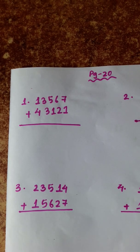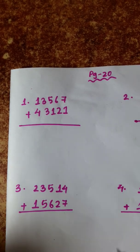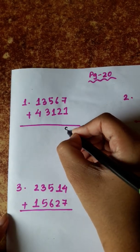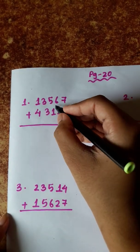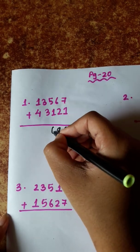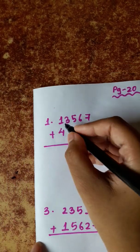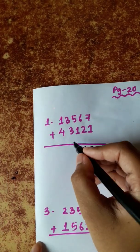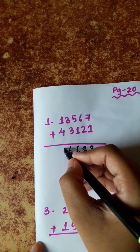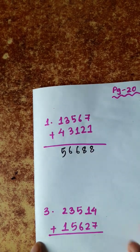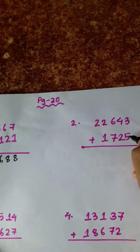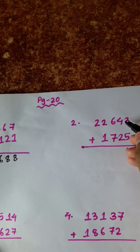Next is page 20 additions. 7 plus 1 is 8. 6 plus 2 is 8. 5 plus 1 is 6. 3 plus 3 is 6. 4 plus 1 is 5. 5 plus 3 is 8.